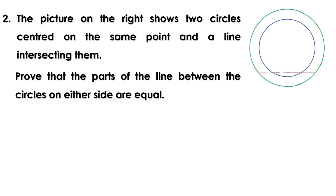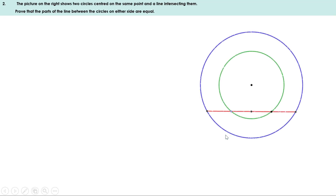Next problem. The picture shows two circles centered on the same point and a line intersecting them. Prove that the parts of the line between the circles on either side are equal. Let the center be O, the chord of the small circle be AB, and the chord of the large circle be CD. Let us draw a perpendicular from the center to the chord and let it meet the chord at P.